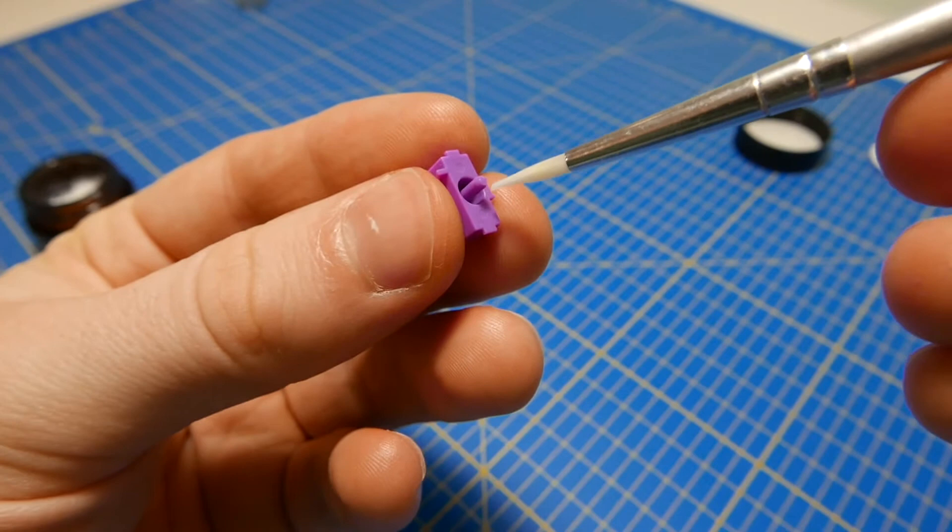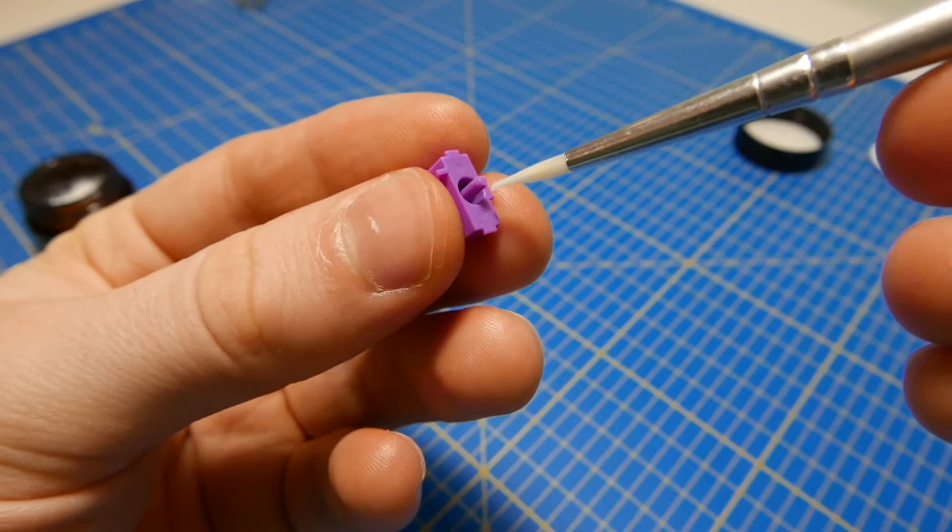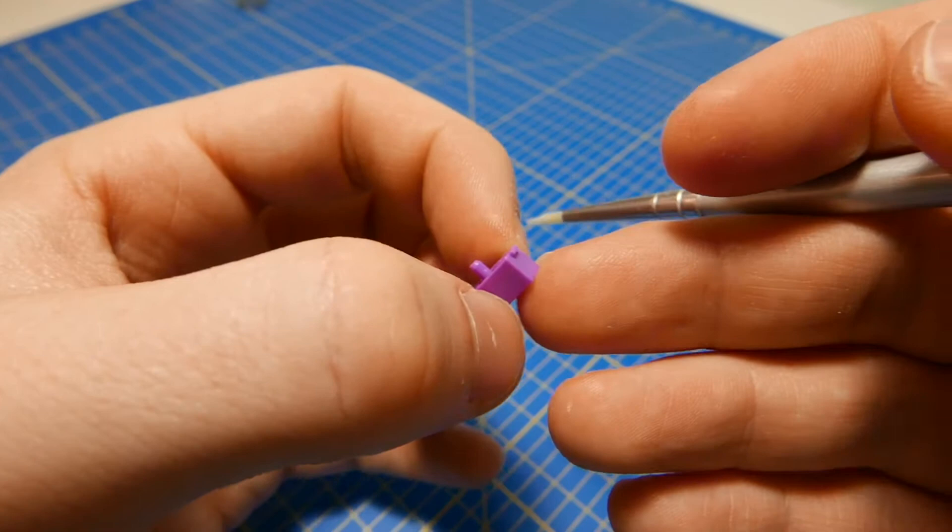Finally, lube the stem on the bottom where the spring touches it, and the sides that slide against the housing. As always, less is more. If you apply the lube too thickly, the switch will feel gunky and sticky, especially on lighter weighted switches.